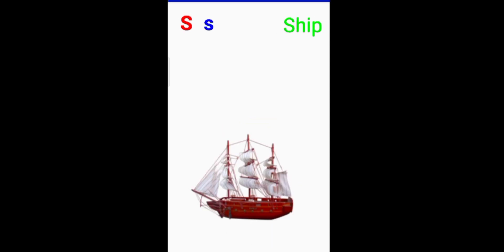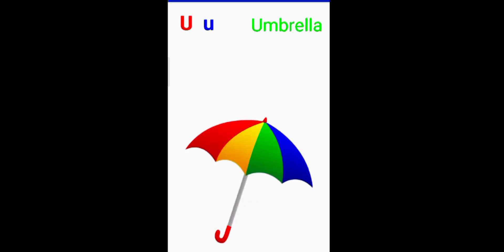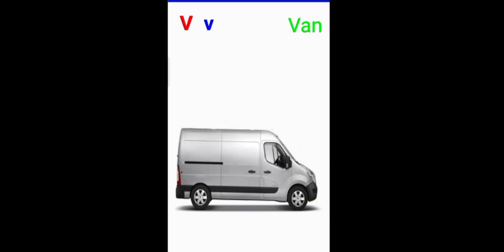S for ship. T for tiger. U for umbrella. V for van.